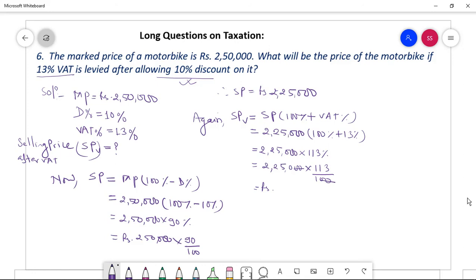What is the product? 2,25,000 times 113 equal to 2,54,250. Yes, equal to Rs 2,54,250. This is SPB, dear students. Yes, excuse me.